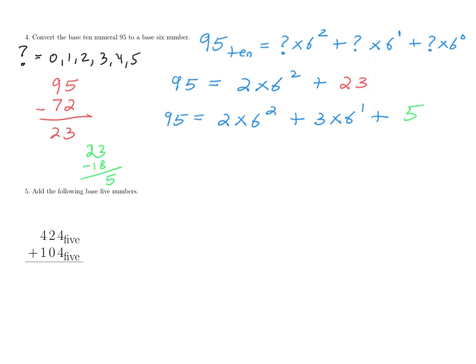To complete this, we would like to use the last place value to represent 5 as something times 6 to the power of 0. Well, 5 times 6 to the power of 0 is actually 5 itself, and what this means is 95, which is still in base 10, it's 2 times 6 squared plus 3 times 6 to the 1st plus 5 times 6 to the power of 0.